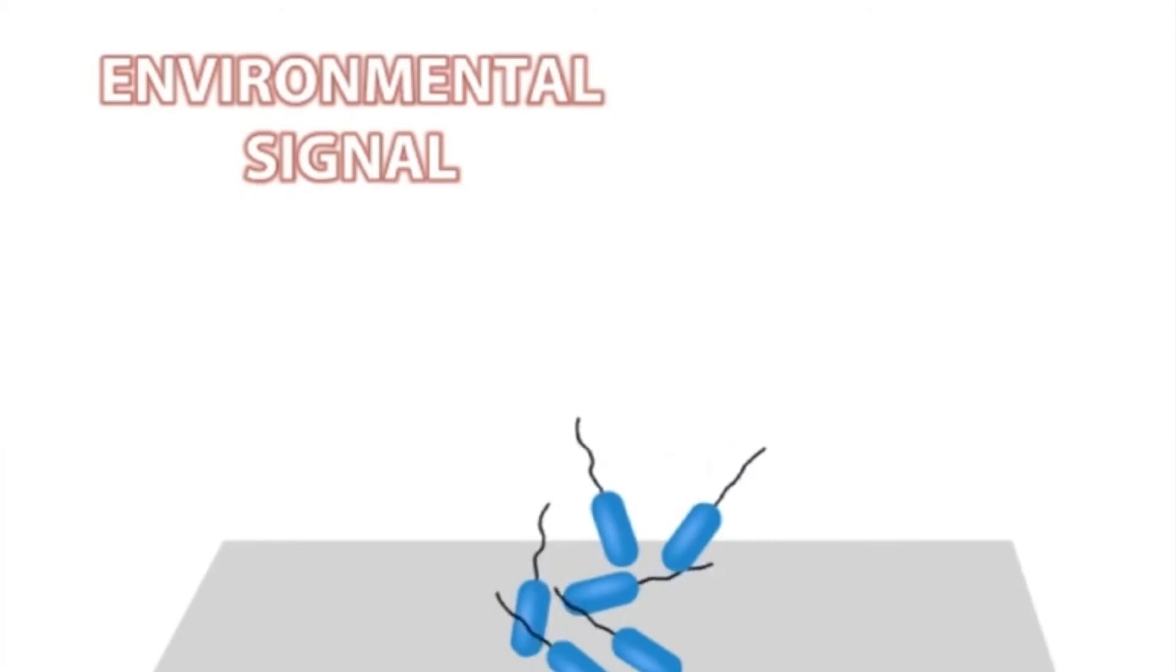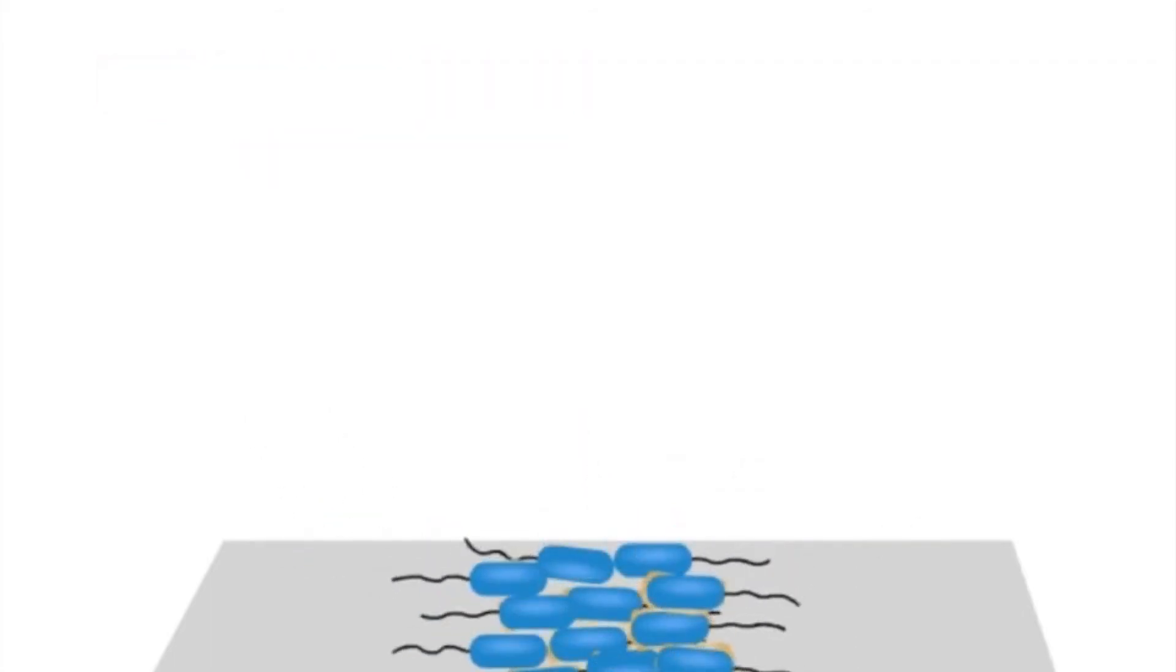As more and more cells bind to the surface and divide, they form microcolonies and can begin to communicate with each other by sending and receiving chemical signals in a process called quorum sensing.